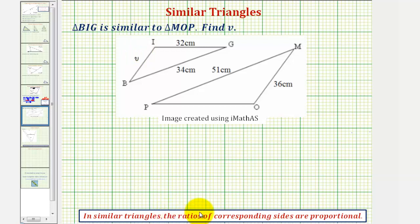In similar triangles, the ratios of corresponding sides are proportional, which means we can find V by setting up a proportion using the ratios of corresponding sides.